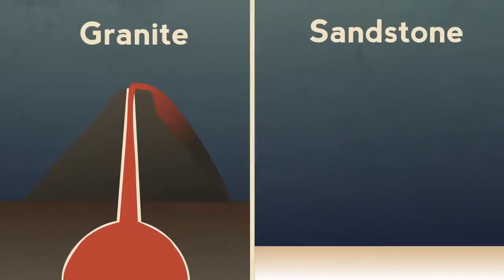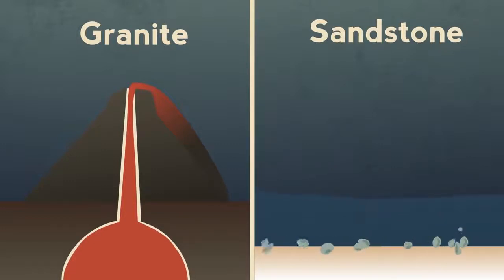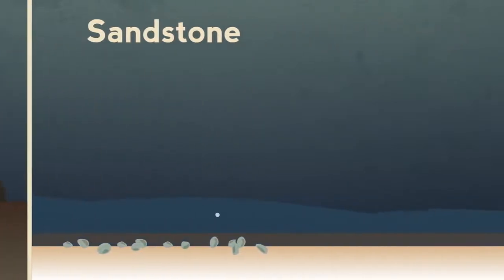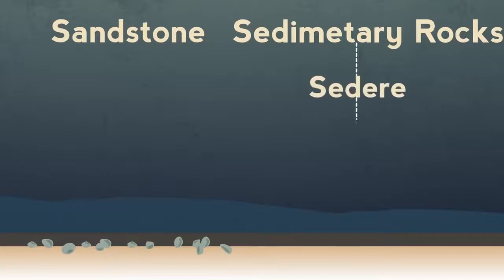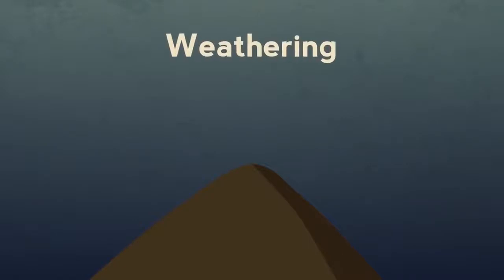Sandstone was made by bits of other rocks carried by rivers to the sea. The bits get smooth and rounded like the pebbles on the beach. These grains settle on the seabed, forming sedimentary rocks — from the Latin sedere, meaning to sit.